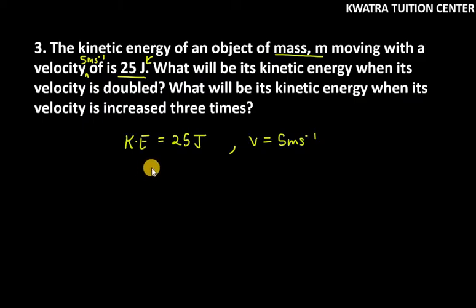So, what will you do first? Mass. What is the formula of kinetic energy? Half mv square. So, kinetic energy value that is 25. Half as it is, m you don't know. Velocity is 5 square. That is 5 square.